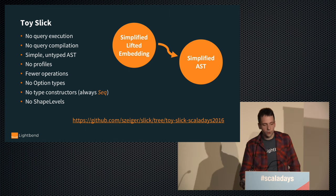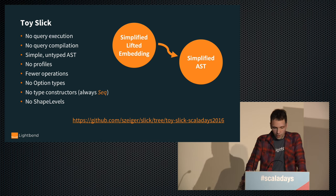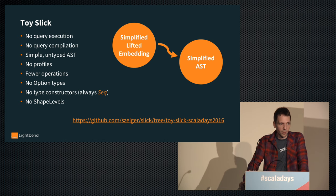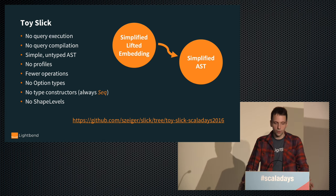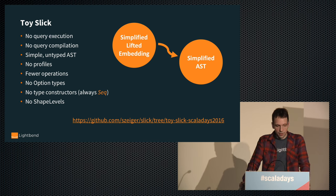What we're going to use today is dubbed Toy Slick. Starting from the current Slick master branch, we've removed everything we don't need and simplified further: no query execution, no query compilation, simpler untyped ASTs with only a few features, no profiles for different databases, no Option types in the lifted embedding, no type constructors — we always give you a Vector — and no shape levels.